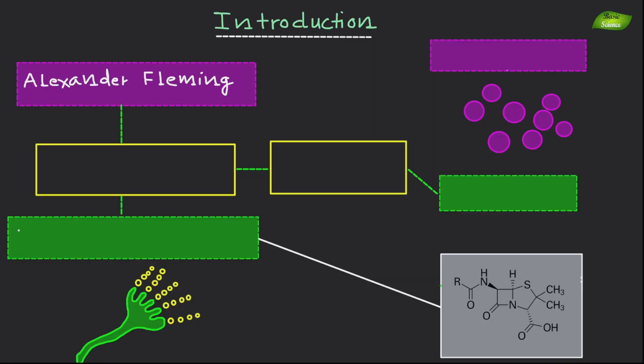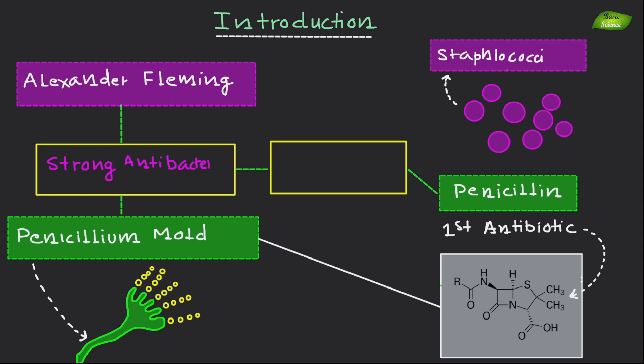Alexander Fleming discovered that penicillium mold stopped the growth of Staphylococci, leading to penicillin, the first antibiotic. Penicillin had strong antibacterial effects and was safe to use.